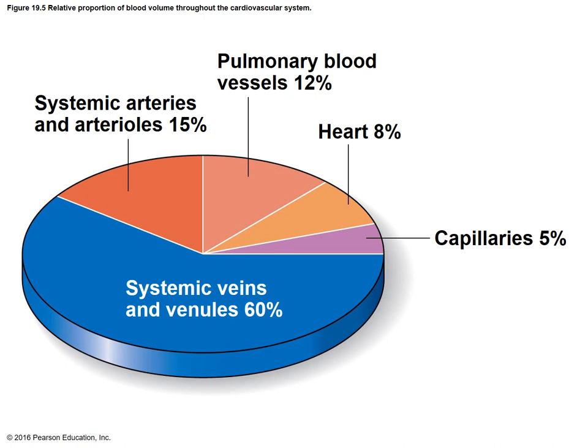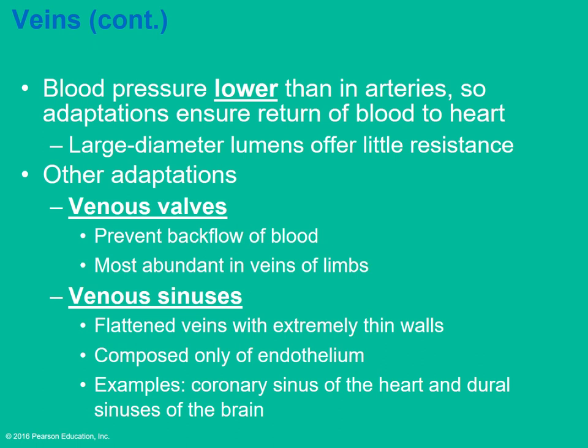This pie chart shows the proportion of blood volume in the vascular system. About 60% of blood will be in the veins and venules of the systemic circulation. Because blood pressure is lower in the veins, there must be some adaptations to keep blood flowing. One adaptation is valves in the veins that prevent backflow of blood, more common in the arms and legs where blood must fight gravity.